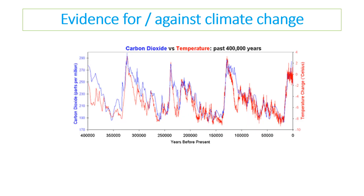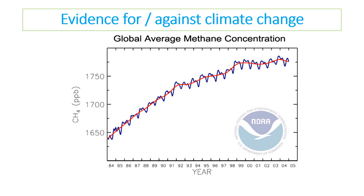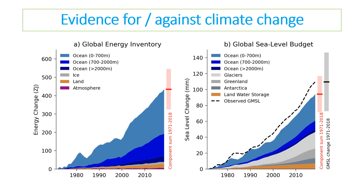We can see that temperatures have gone up every time global carbon dioxide levels go up — temperature follows it closely. However, between 2000 and 2010, carbon dioxide levels increased but temperature did not rise correspondingly. This also links closely to methane: methane levels have also increased. And we can see the sea is absorbing more energy and heat as a result.